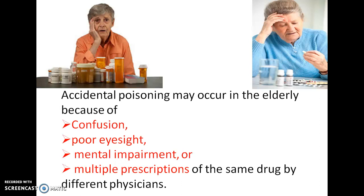Especially in the elderly, accidental poisoning incidences are very high because of age-induced cognitive impairment. They may experience various physiological changes contributing to confusion, poor eyesight, mental impairment, or multiple prescriptions. This older population may be suffering with many comorbid conditions, visiting many physicians and receiving different prescriptions — polypharmacy — which is a major reason for poisoning in elderly patients.